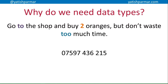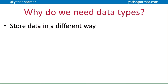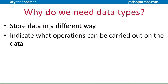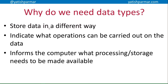Another example would be a telephone number, which we commonly refer to as a number, but the computer can't handle it that way — we'll see why. Basically, what you need to tell the computer is how you want to store that data, because different data types are stored in different ways. They also indicate what operations can be carried out on the data. In a nutshell, a data type informs the computer what processing and storage needs need to be made available in order to handle that data.